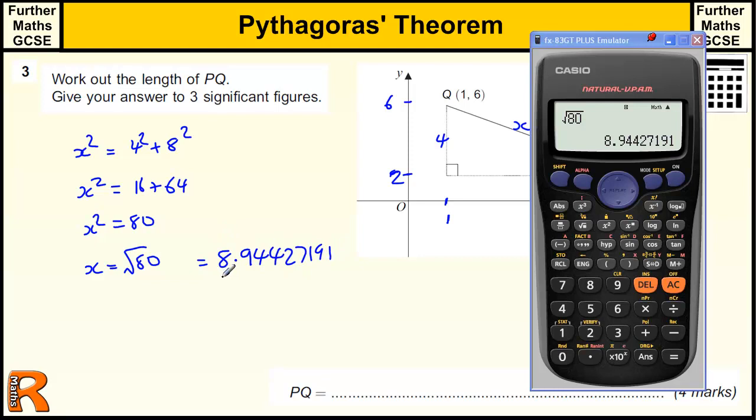And then three significant figures, starting from the 8, we've got 1, 2, 3 significant figures. So we chop the number off there and we round. We would round up from this number, but this is a 4, so we don't round up. We just leave it as 8.94.